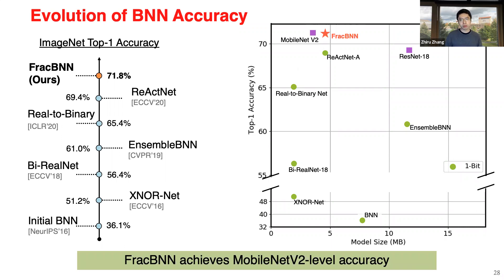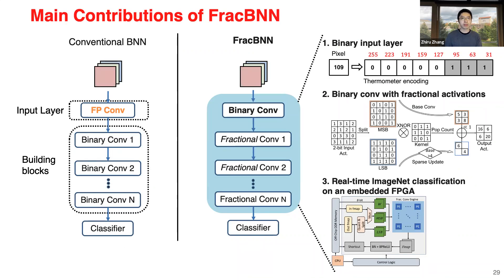With FRAC-BNN, we are the first to propose a BNN that achieves MobileNetV2-level accuracy, reaching close to 72%. We did three major things: first, we binarized the input layer; second, we applied precision gating to binary convolution layers for dual-precision compute; and third, we implemented the whole thing on embedded FPGA showing real-time performance. People previously found the input layer very hard to binarize without losing accuracy, but it's actually very important that all layers are binarized.